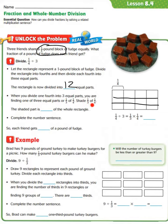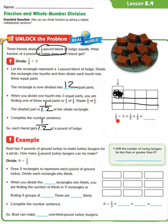Now we're going to shade 1/3 of 1/4. We come over here and shade 1/3 of 1/4. The shaded part is 1/12 because now we have 12 equal parts and we only shaded 1. So the shaded part is 1/12 of the whole rectangle. Each friend gets 1/12 of a pound of fudge. We see that 1/4 divided by 3 equals 1/3 times 1/4, and that equals 1/12.